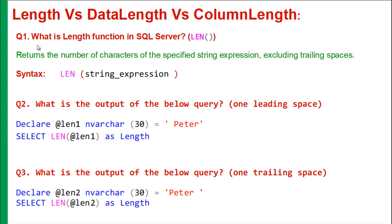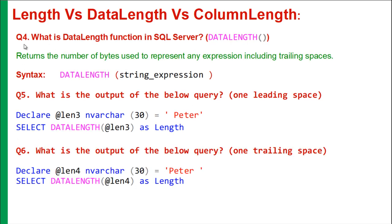Going back to question 1: the length function in SQL Server returns the number of characters in the string expression, and it will not consider any trailing spaces — that is, spaces coming at the end of the string. The data length function returns the number of bytes taken by the particular string, including spaces in the memory calculation.